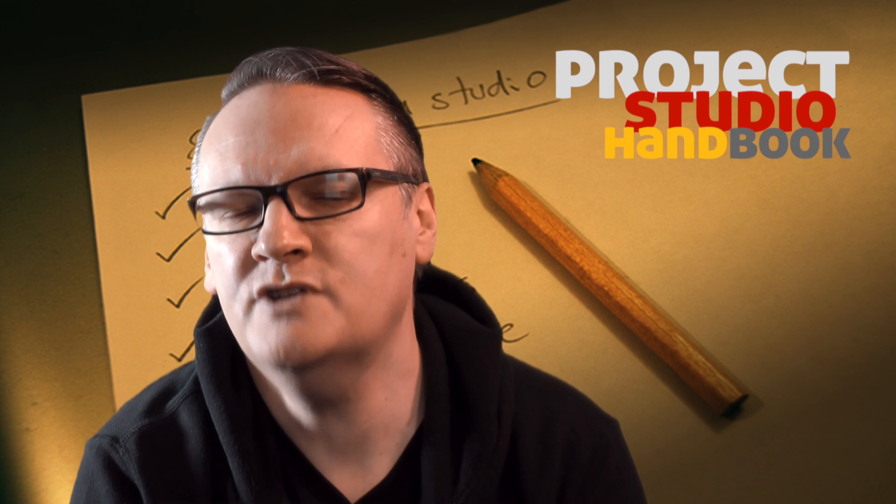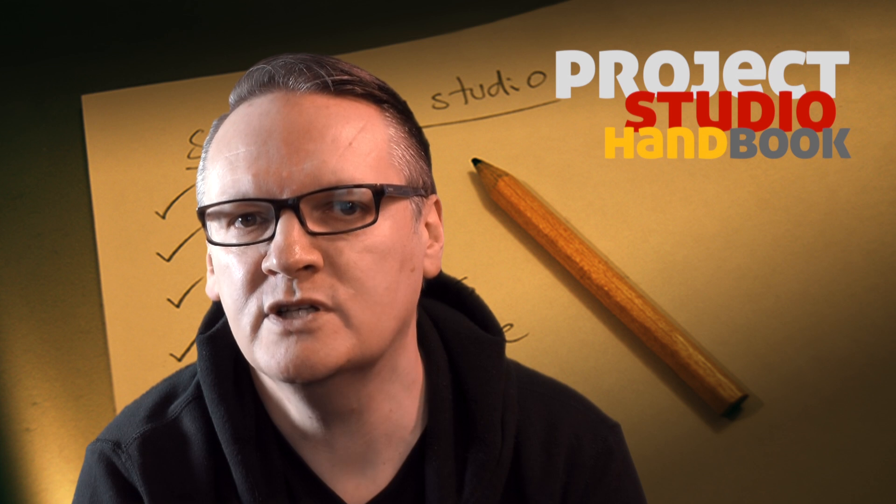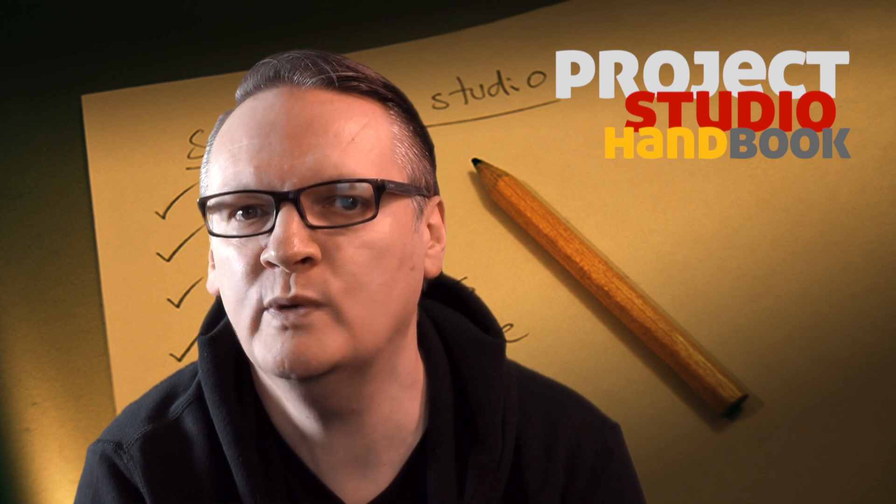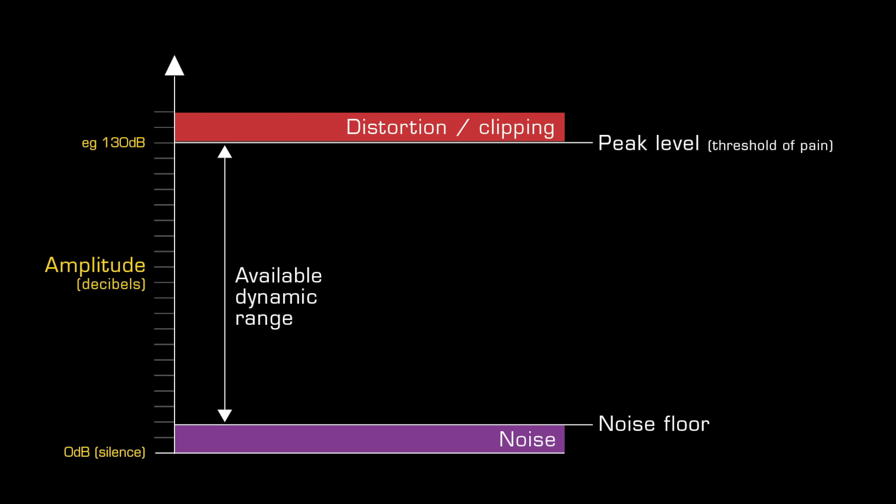To sum up, the dynamic range of human hearing is not between the loudest and quietest sounds that the human auditory system can accommodate. It is the difference between the loudest and quietest sounds that we can hear, or the range of sounds between the noise floor and peak level.